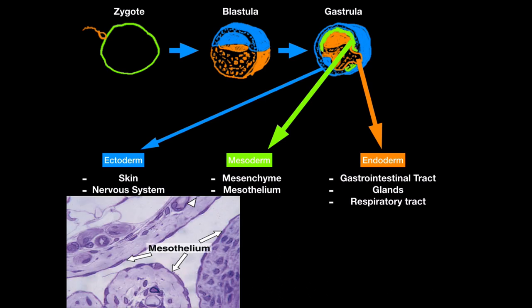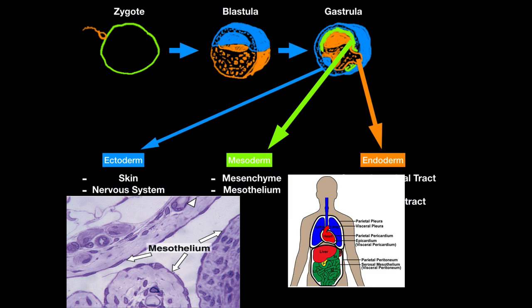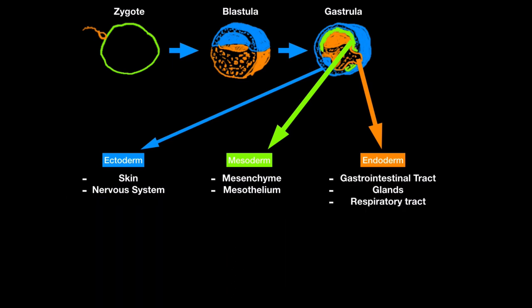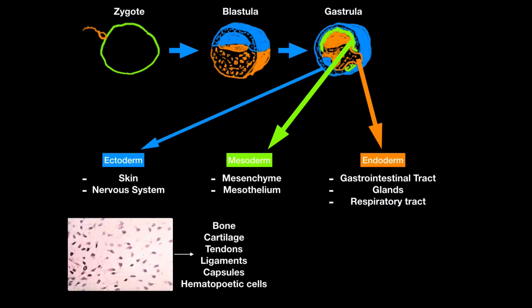What I wanted to get to is the mesenchyme, because that's what forms connective tissue. So connective tissue comes from the middle germ layer, the mesoderm. From the mesenchyme will develop structures like bone, cartilage, tendons, ligaments, joint capsules, and even some hematopoietic cells like blood.